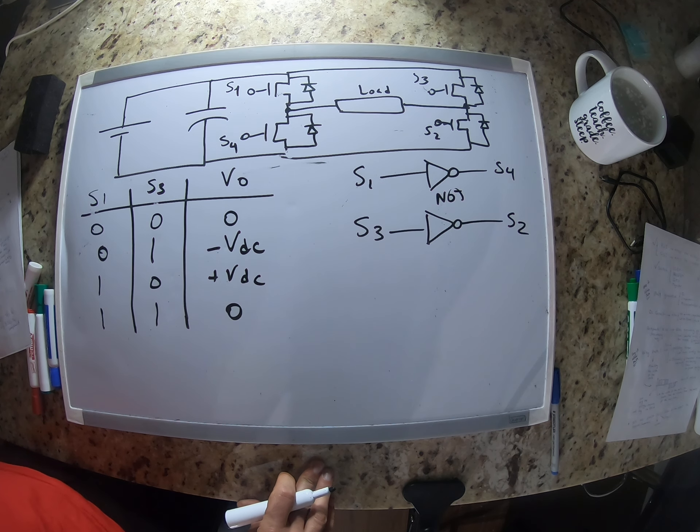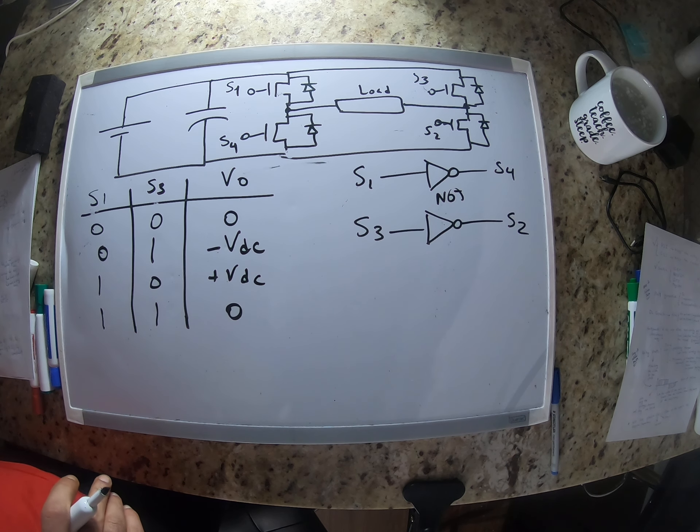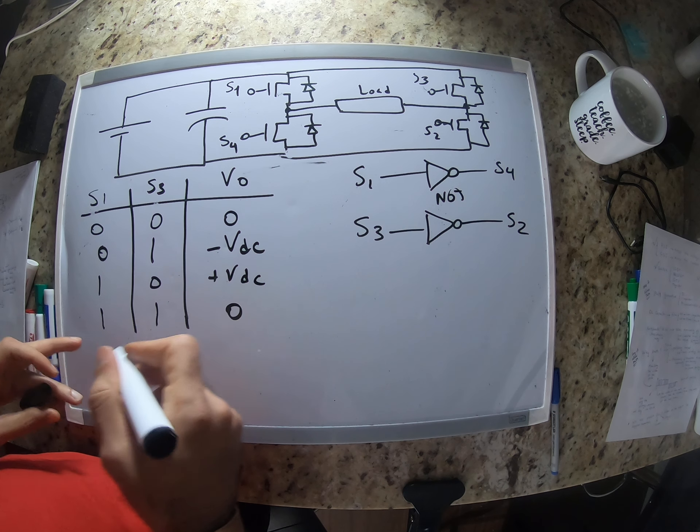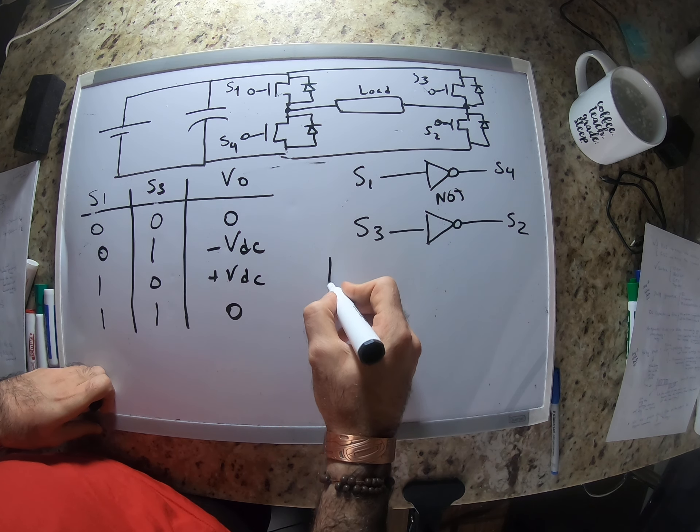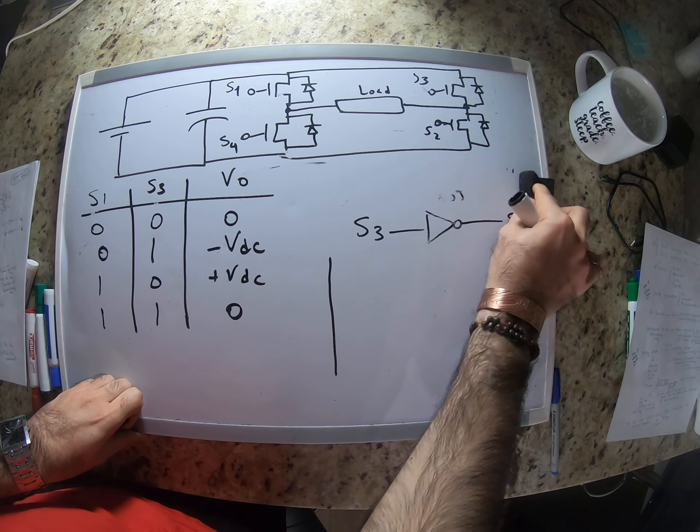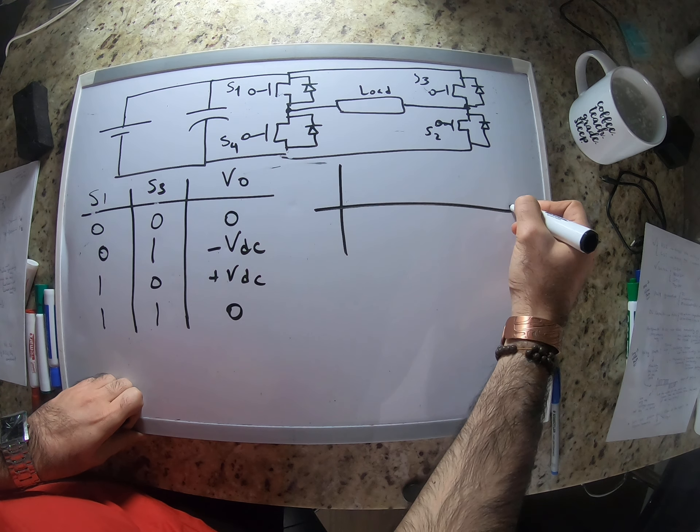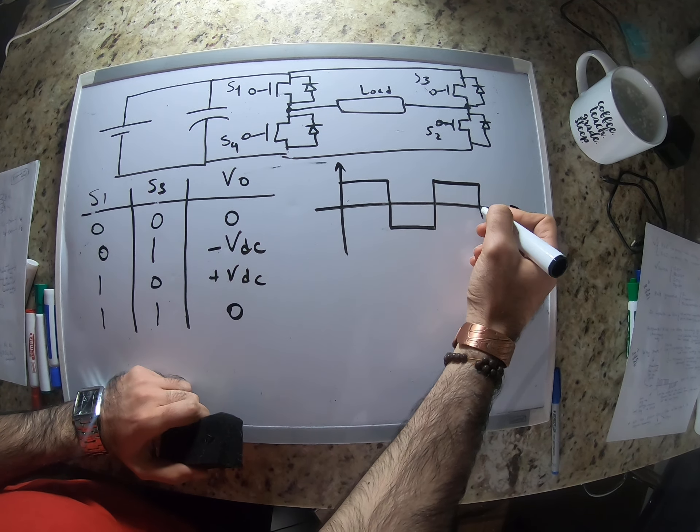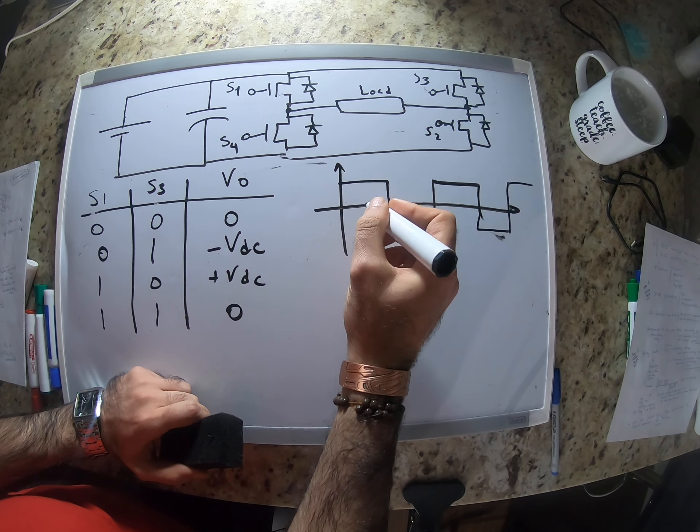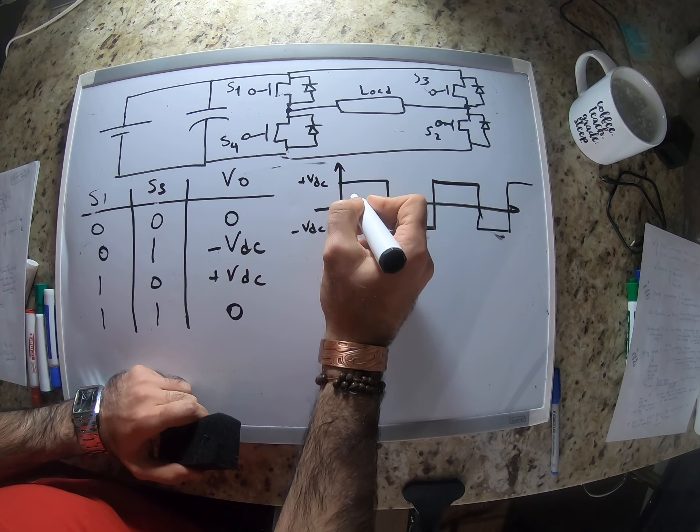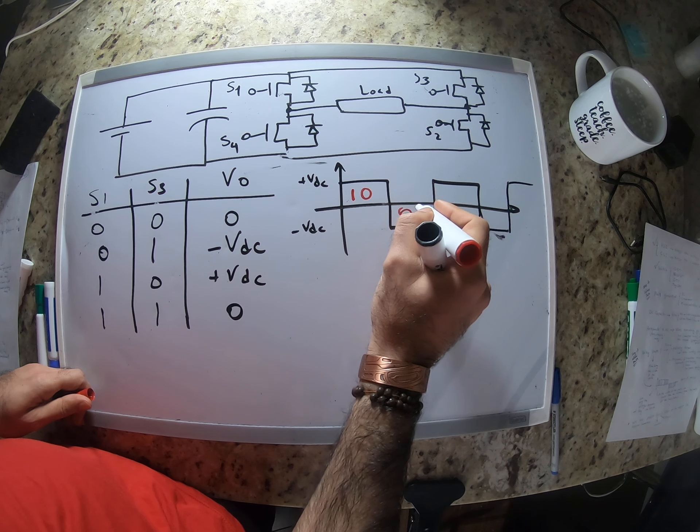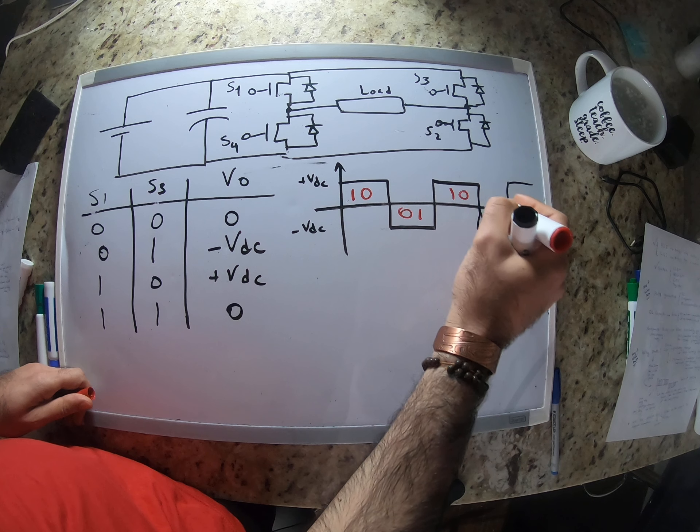Now let's draw the actual output voltage and we're going to see what's happening here. So here we have positive VDC, negative VDC. This is where we have S1 on, S3 is off. This is off, on. On, off. Off, on.